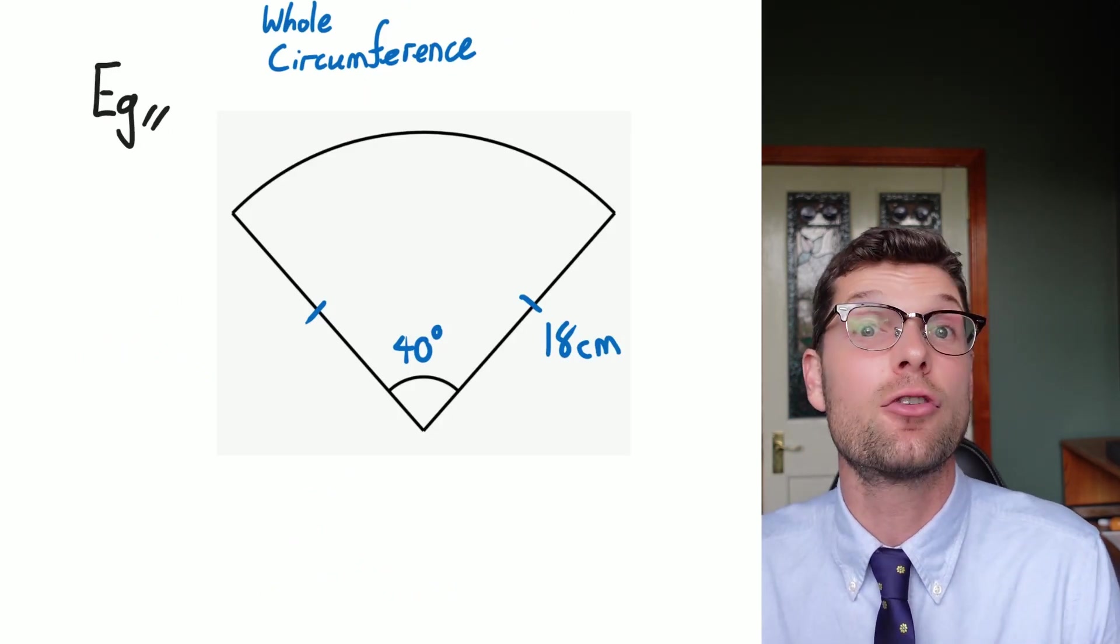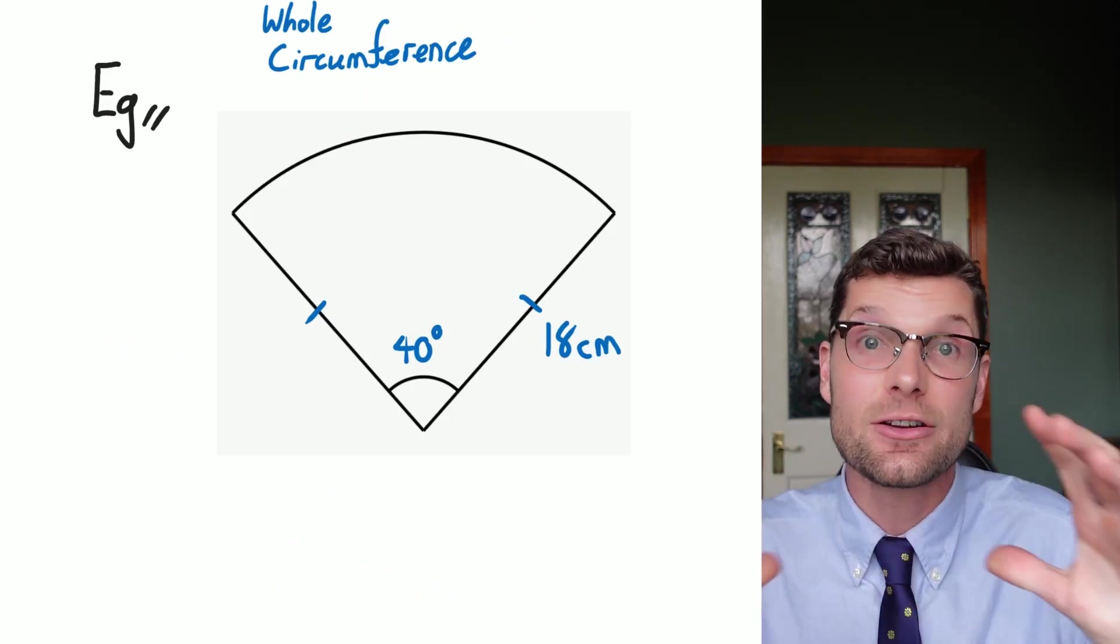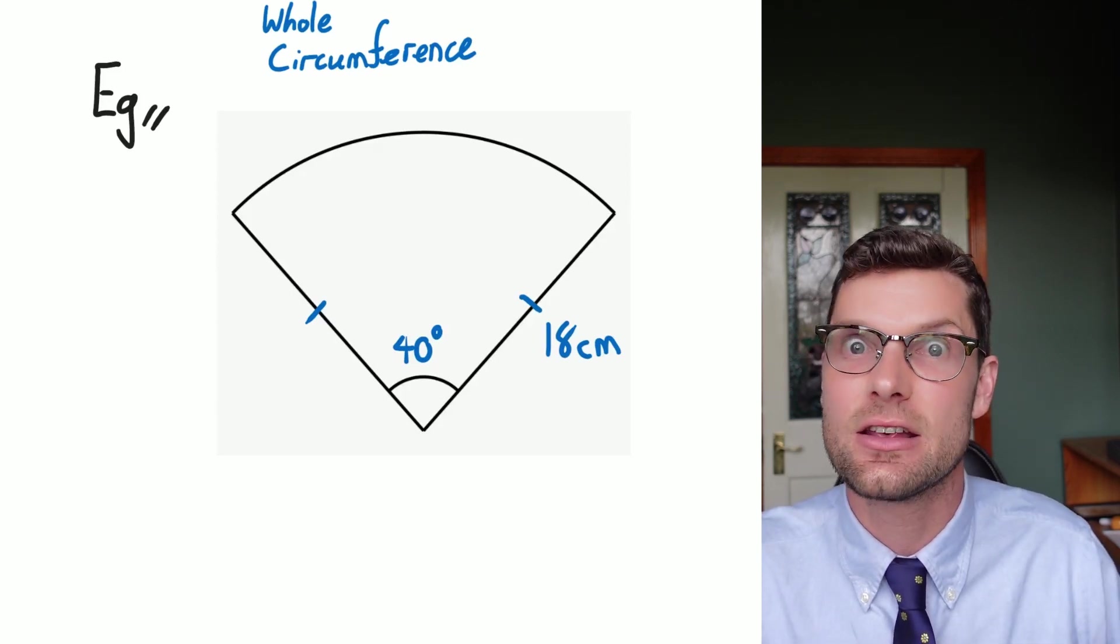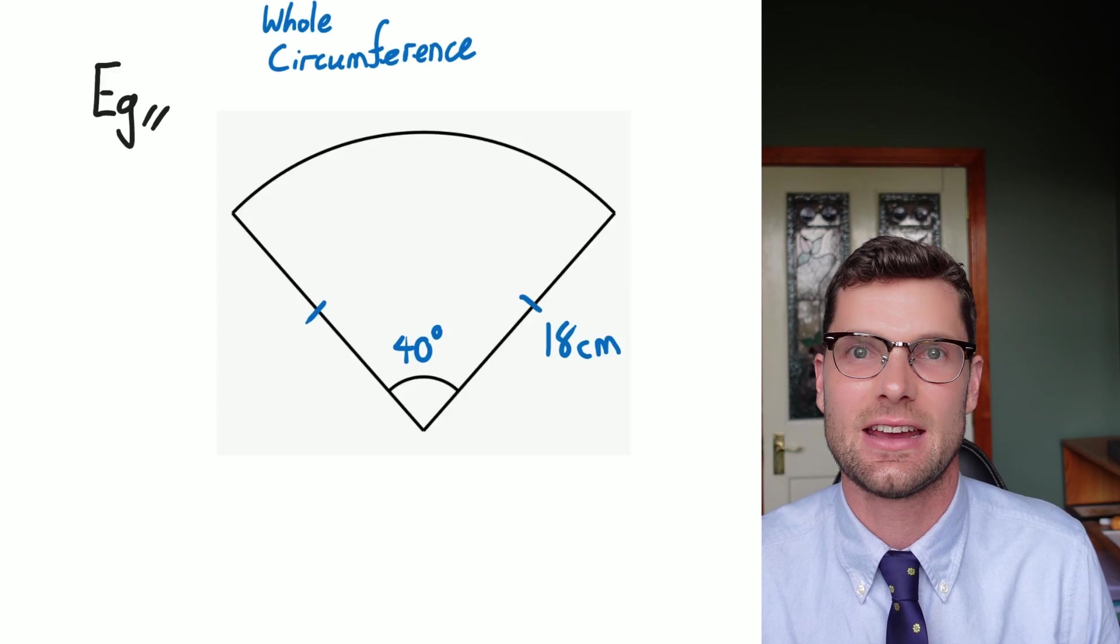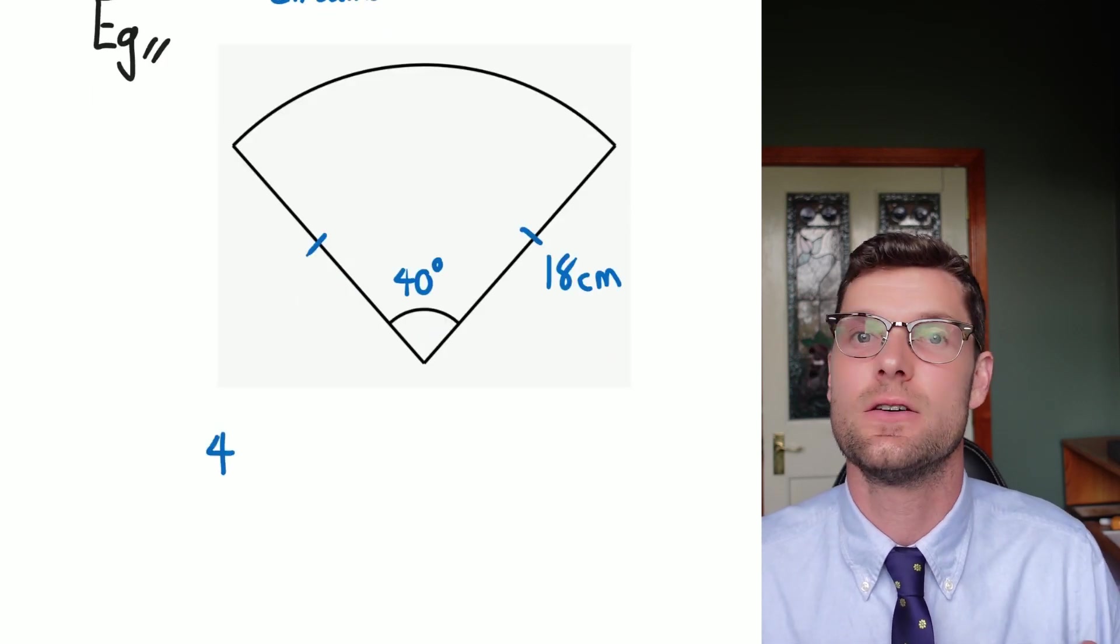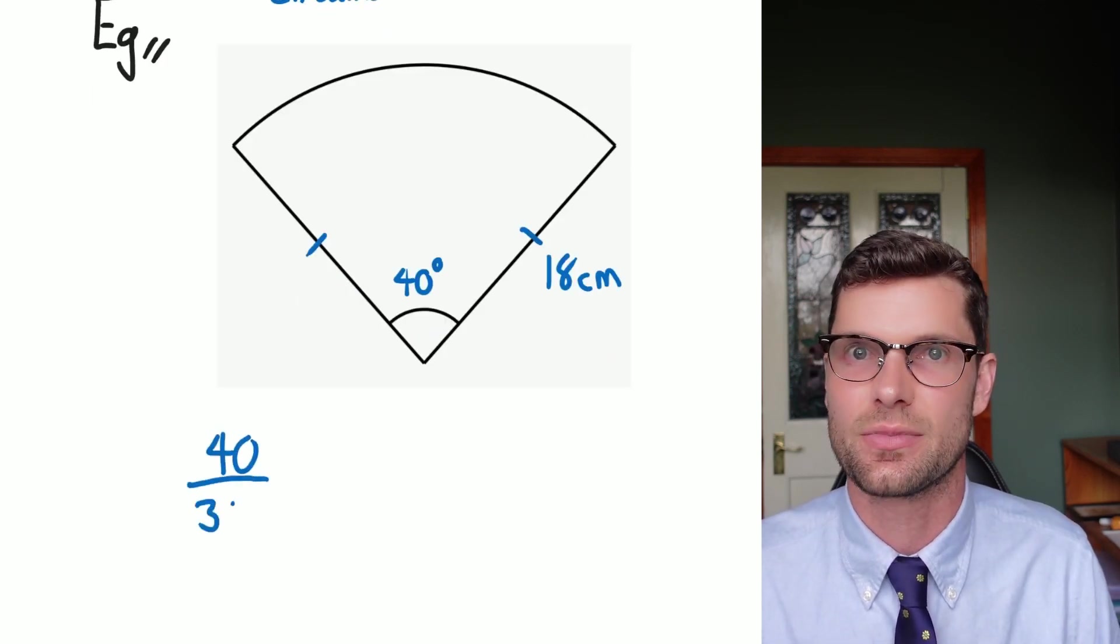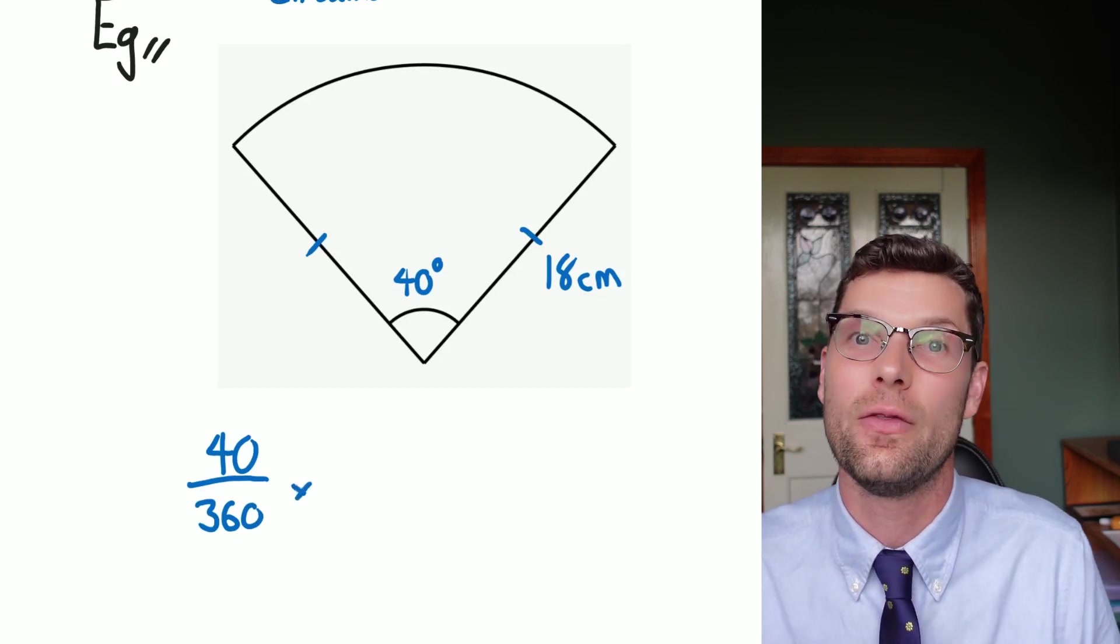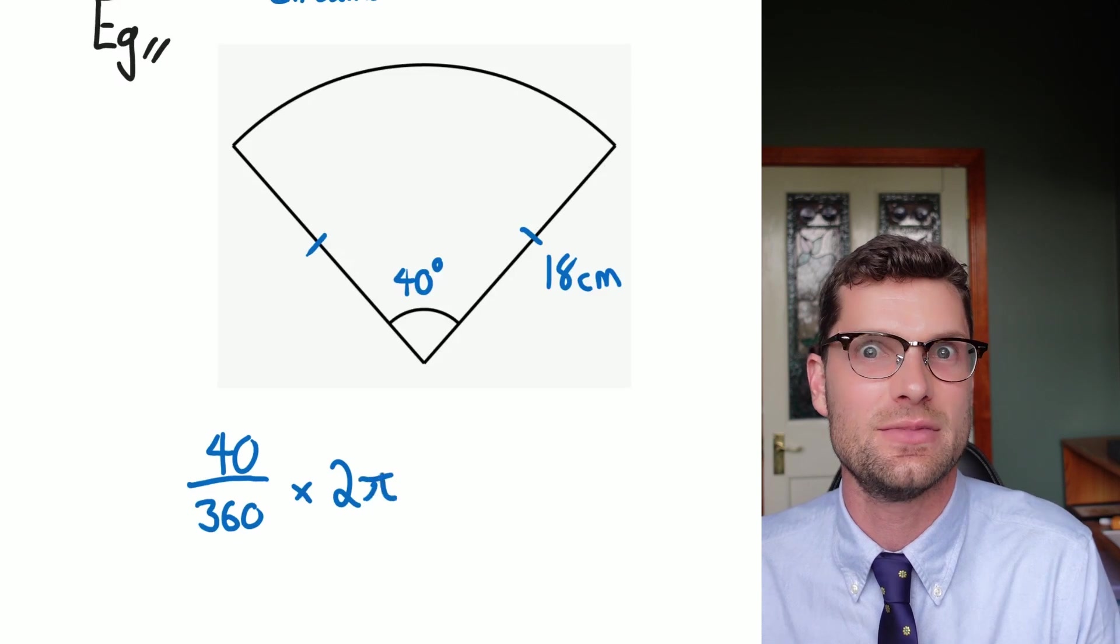So if I have a look at this example here, I've got 40 degrees out of the whole 360 and I've been given the radius. So the degrees that I've got, or the section of the sector that I've got, is 40 divided by 360, and then to find out the circumference I need to multiply it by 2πr, or in this case 2π times 18.